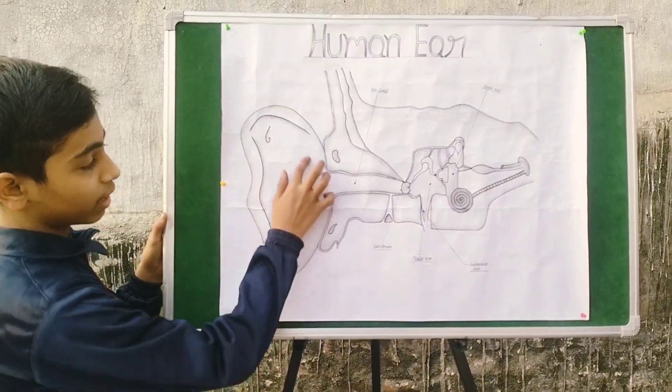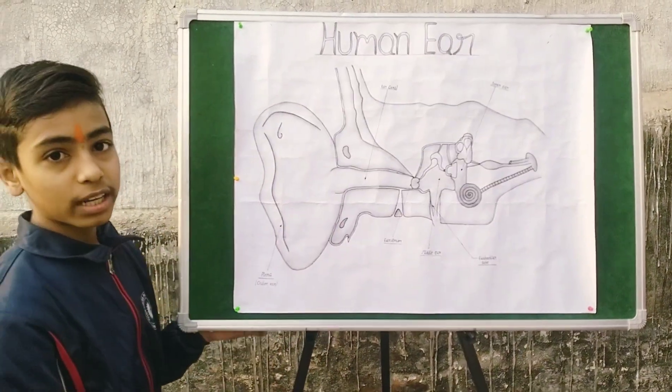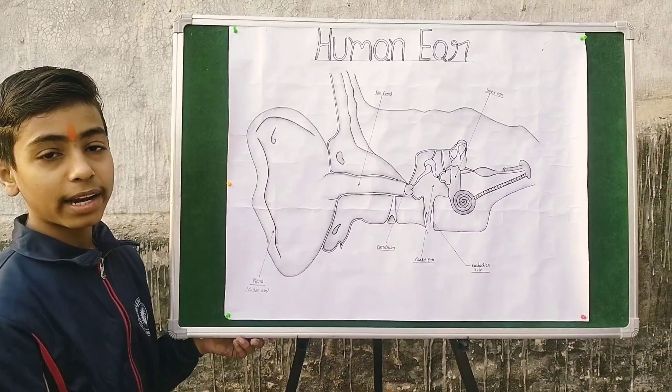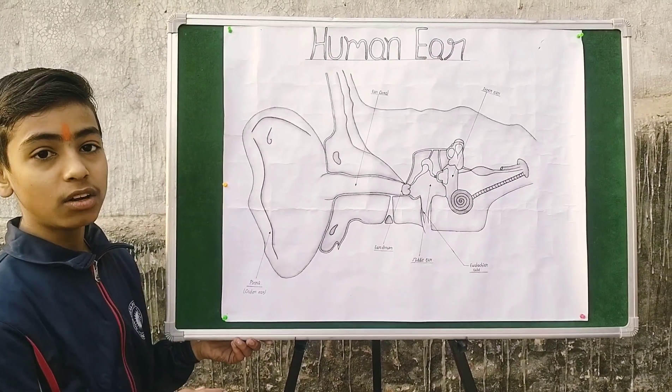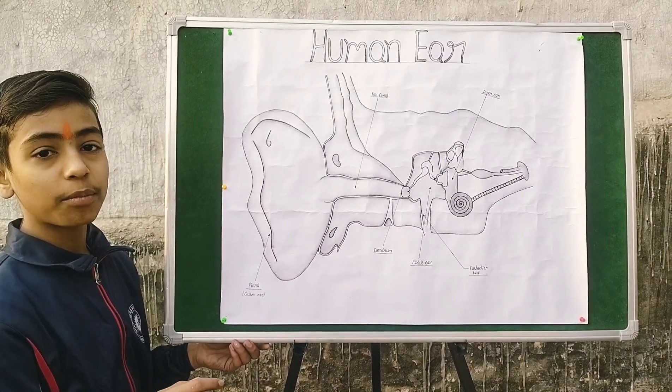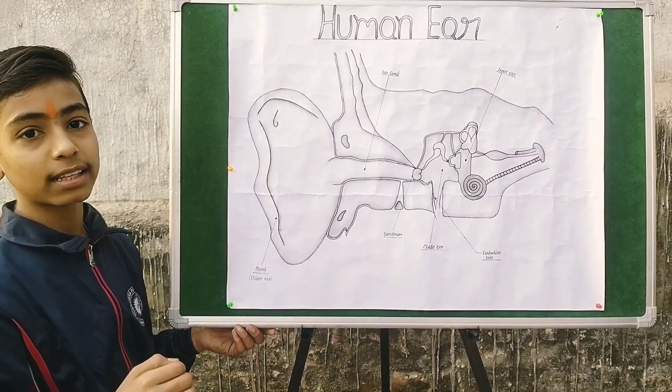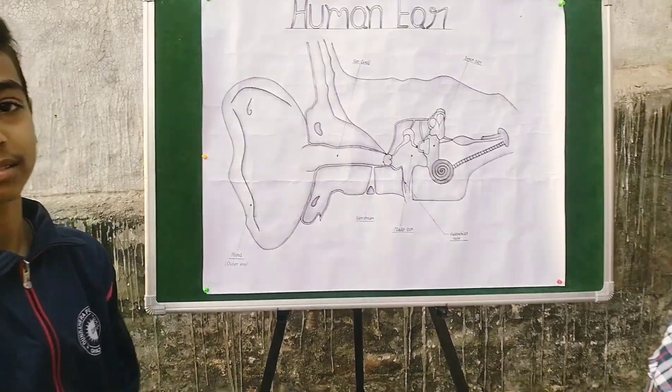The outer ear. The outer ear is called the pinna. It is funnel shaped and its main job is to collect sound.